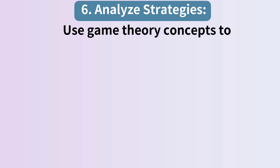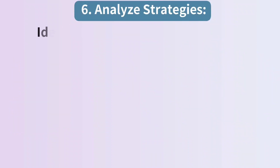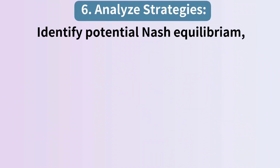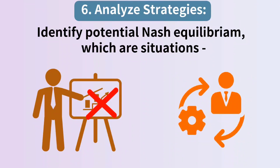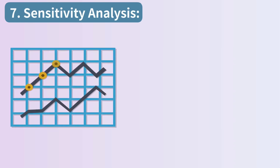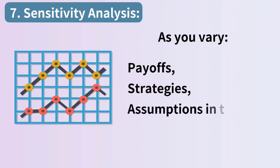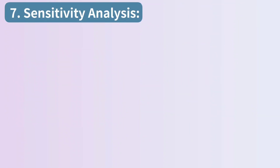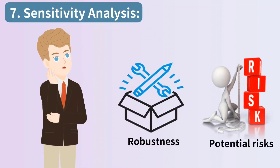Step 6: analyze strategies. Use game theory concepts to analyze the strategies and outcomes. Identify potential Nash equilibria, which are situations where no player can improve their payoff by changing their strategy. Step 7: sensitivity analysis. Assess how the outcomes change as you vary the payoffs, strategies, or assumptions in the game. Sensitivity analysis helps in understanding the robustness of the strategies and the potential risks.